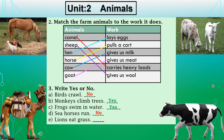Sentence E: 'Lions eat grass.' No — because a lion is a meat eater, a carnivore. It eats the meat of small or other animals. So 'lions eat grass' is incorrect. Dear students, I hope you have done this activity. Now let's move to question number four.